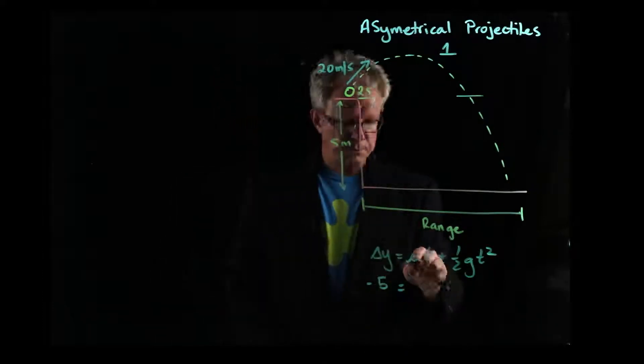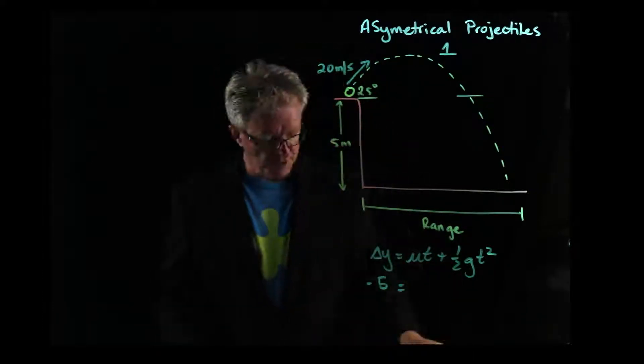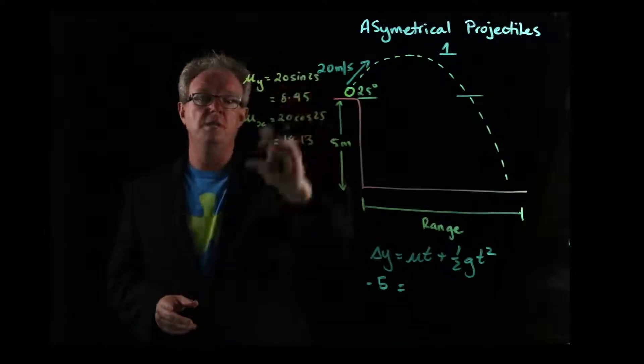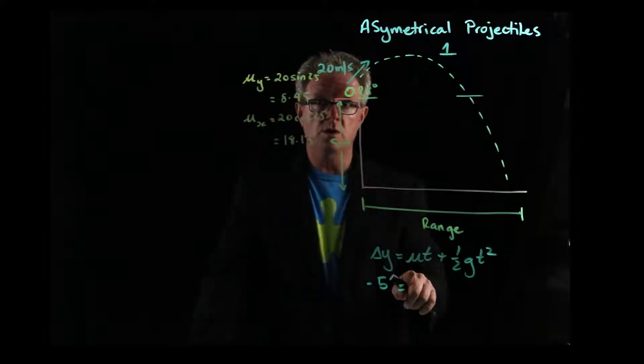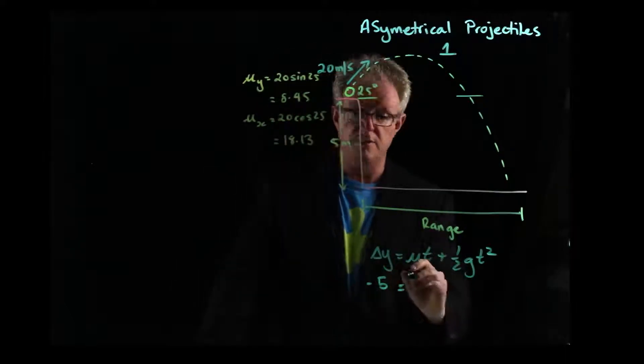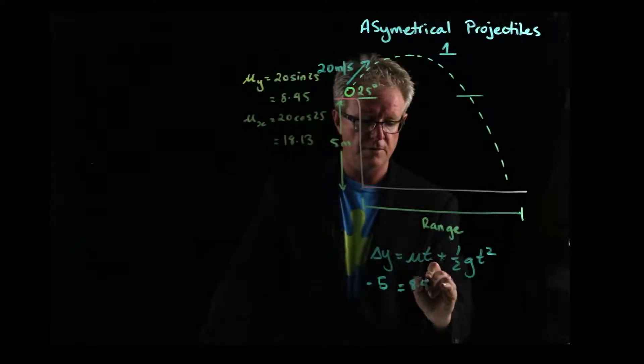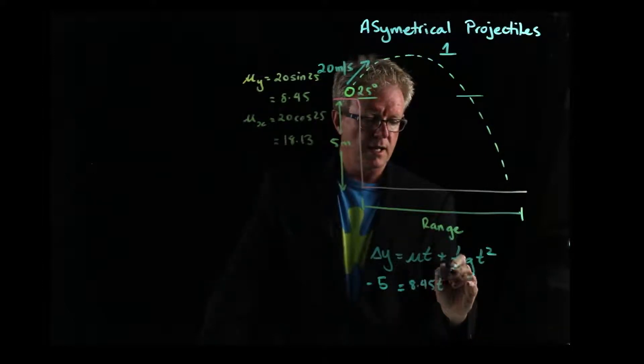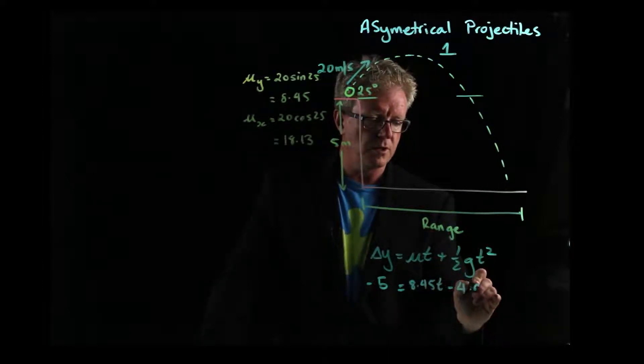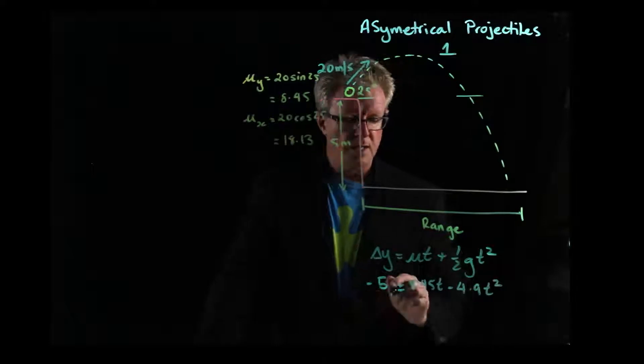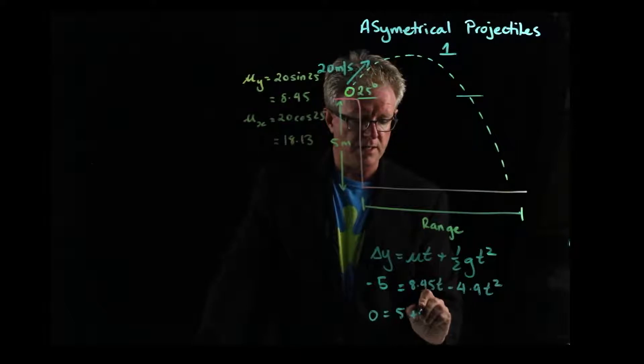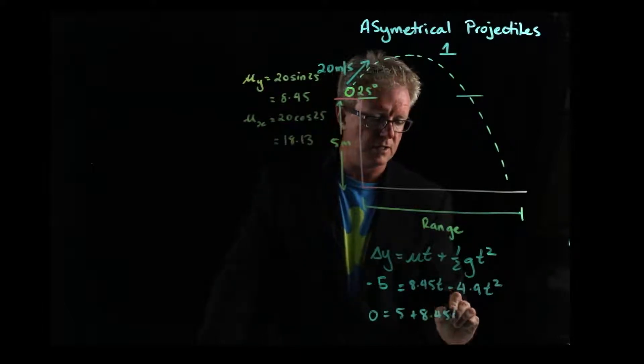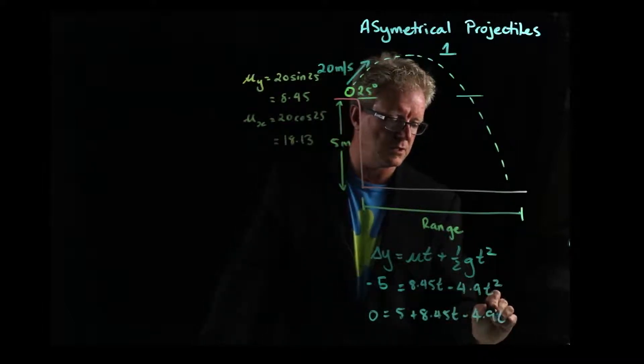Then we have a component. So let's work out the components here. So we can then now rewrite this where if we're talking about in the y direction now, so this is going to be 8.45t and that's going to be minus 4.9t squared. So now if we make this side equal to zero, zero equals five plus 8.45t minus 4.9t squared.